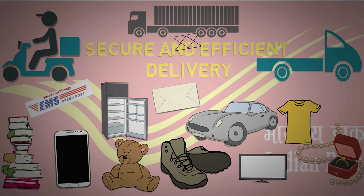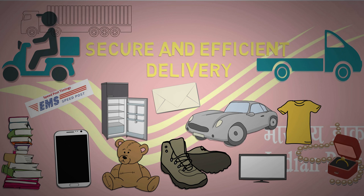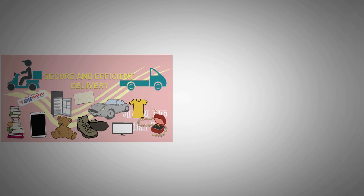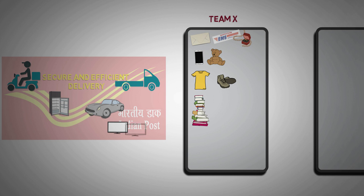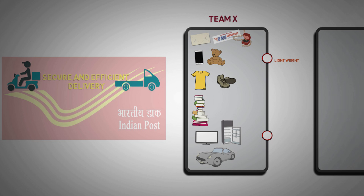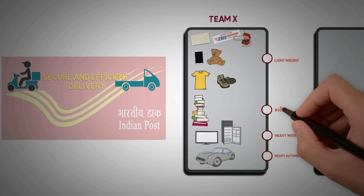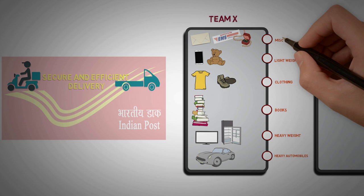Now, it is almost impossible for a single team to handle the overall process and effectively route all these products to its destination. So, the company executes this process simply by splitting the work among multiple teams. First team, let's say team X, has clear information about the products. It categories them logically such as lightweight, heavy weight, heavy automobiles, books, clothings, etc.